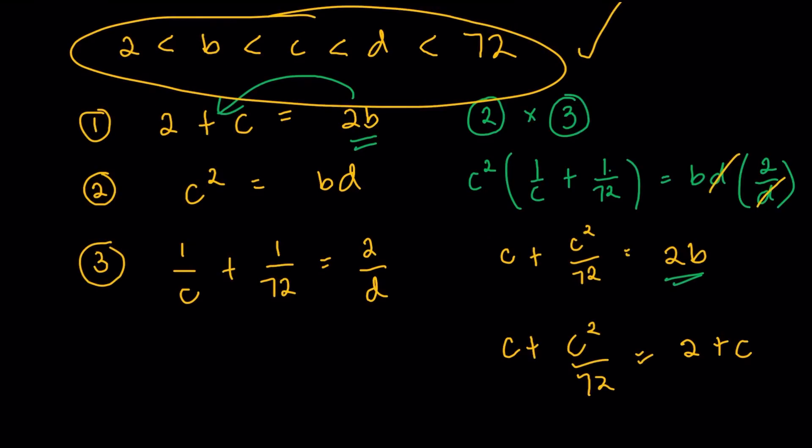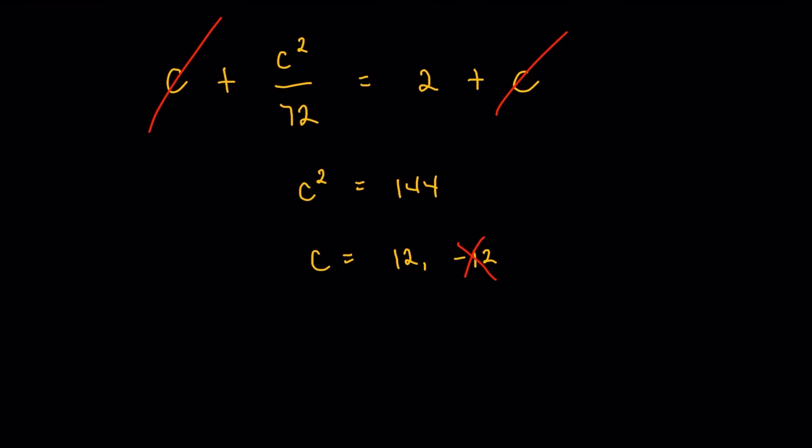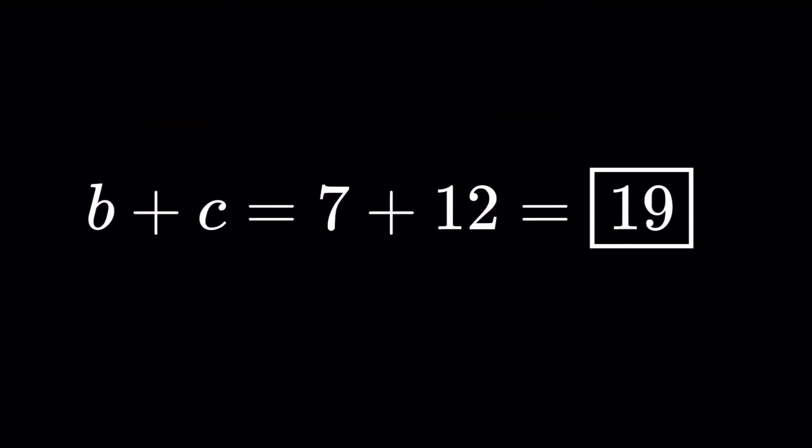Now, we could always go back to the first equation. We do have 2 plus C being equal to 2B from the arithmetic sequence. So 2 plus 12 is equal to 2B. So 2B is equal to 14. So obviously, we're going to get B here to be 7, right? So we do have the C that we need. We do have the B that we need. So B plus C would just simply be 7 plus 12. And we're going to get the final answer of 19.